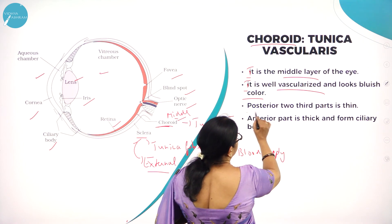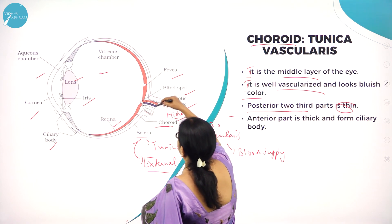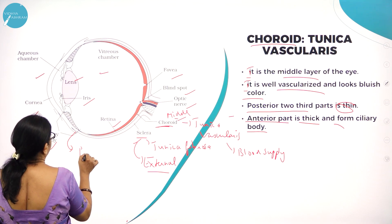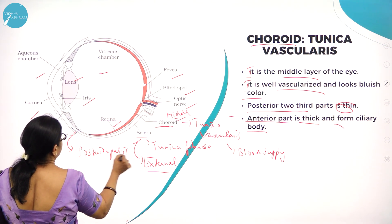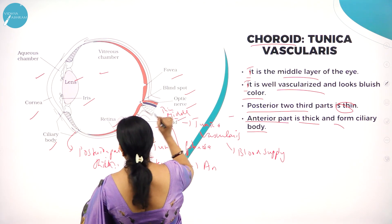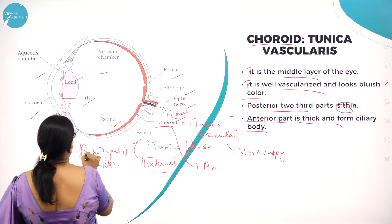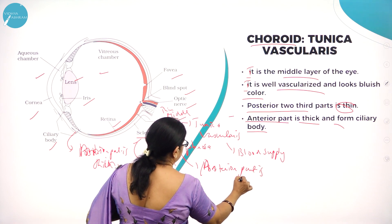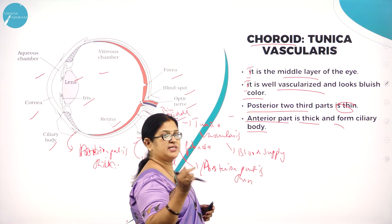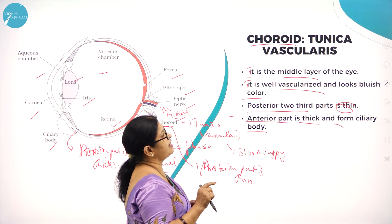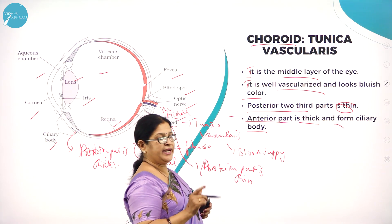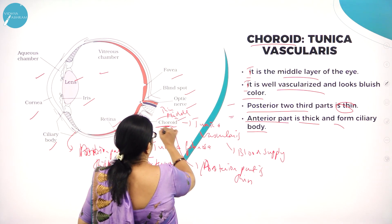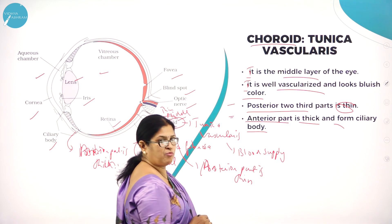The posterior two-thirds part of the choroid is thin, while the anterior part is thick and forms the ciliary body. So choroid, which is the second layer of the eye also called tunica vascularis, is the middle layer, well vascularized and bluish in color, with the posterior two-thirds thin and the anterior part thick, forming the ciliary body.